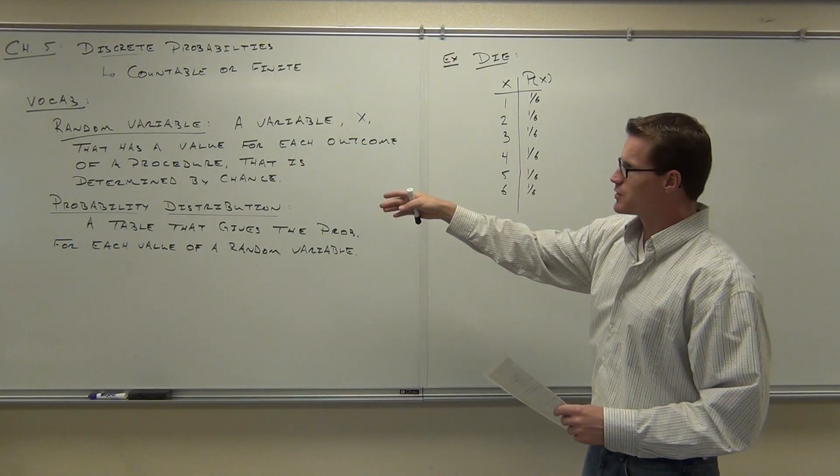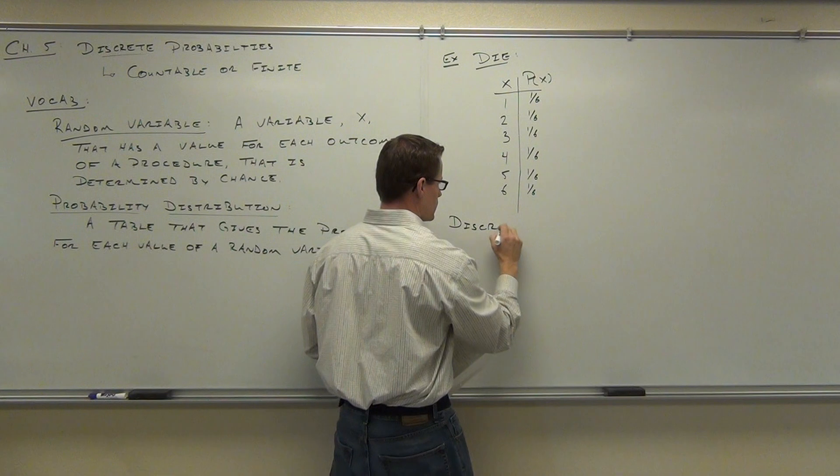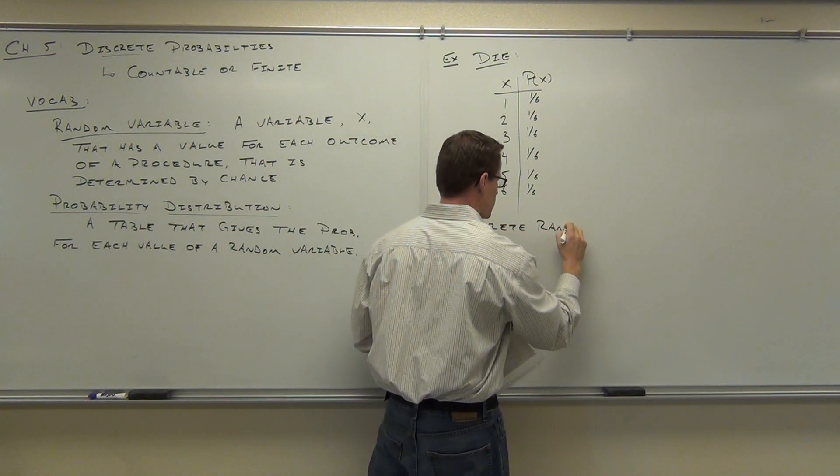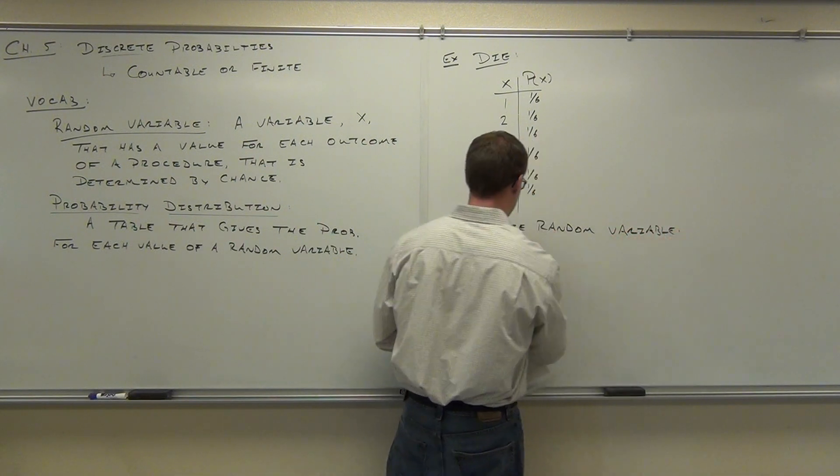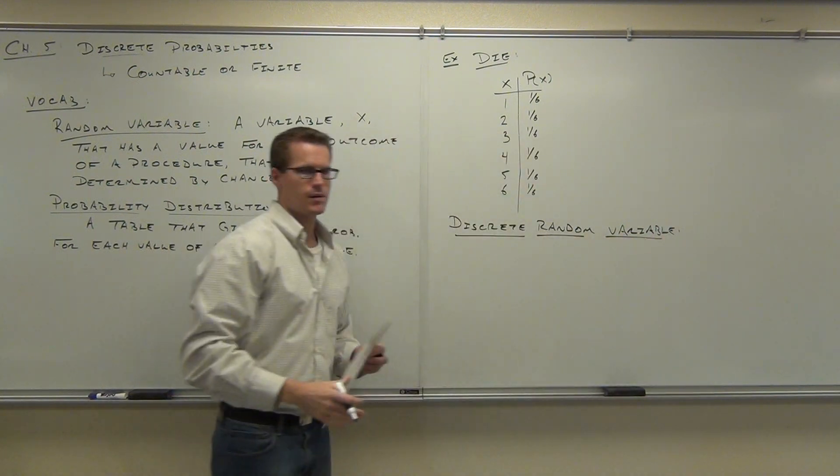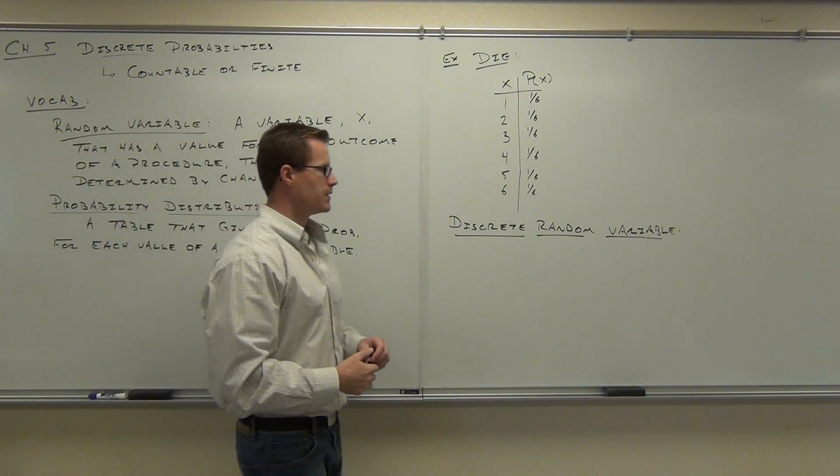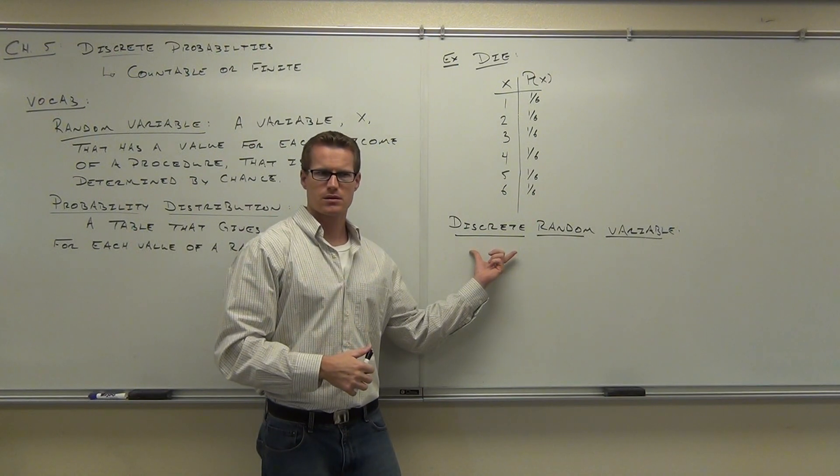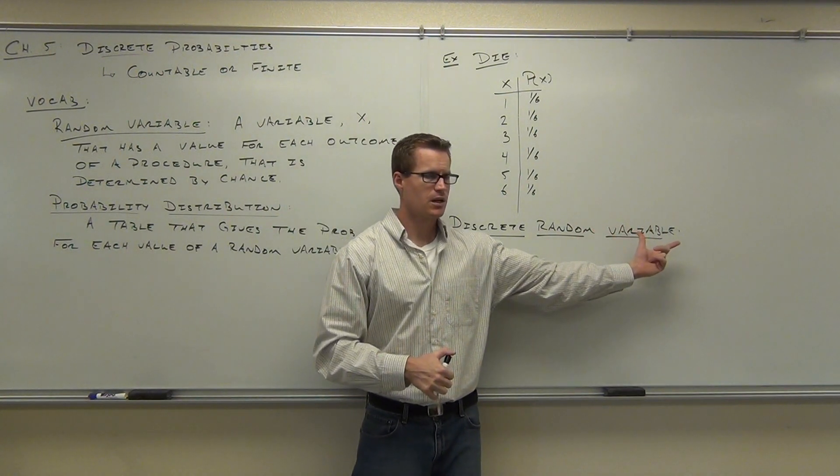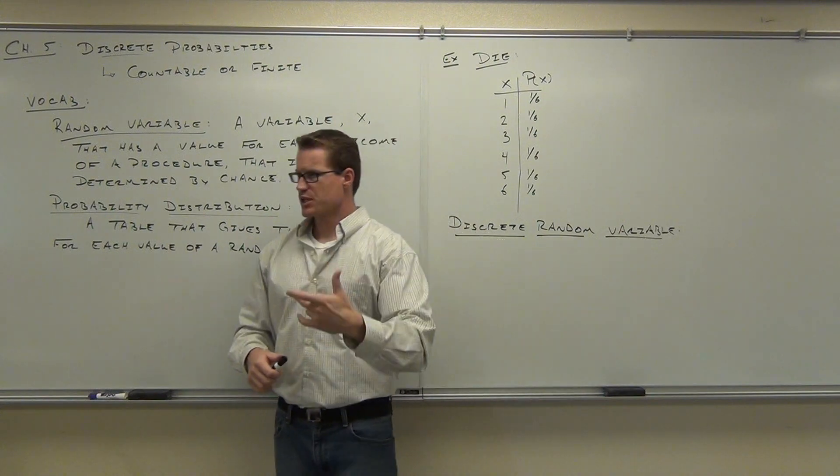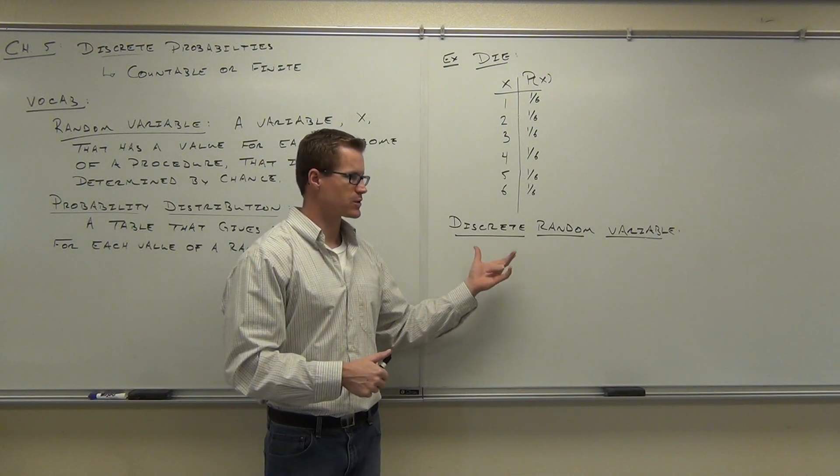So we have a random variable, we have a probability distribution. We haven't really talked about discrete yet. We have a discrete random variable. Discrete means, what was discrete mean again? Counting. Sure, countable or finite. And random variable, those are just the values of a procedure that we can get. So a discrete random variable signifies a procedure where all you can get out of it are countable or finite number of items. That's what a discrete random variable signifies. So it's a variable with a finite or countable number of values.